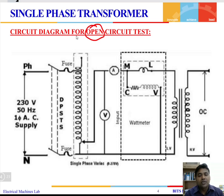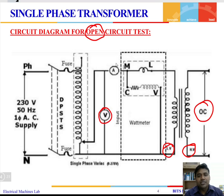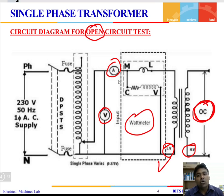Let us see the circuit connection for the open circuit condition. We generally keep the high voltage side open and all the measuring instruments are connected on the low voltage side. The voltmeter, ammeter, and wattmeter are connected on the low voltage side, and the high voltage side is kept at open circuit. So all measurements are done on the low voltage side.